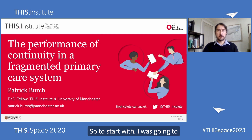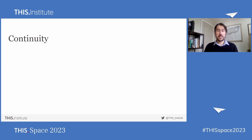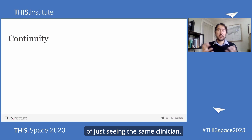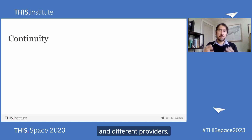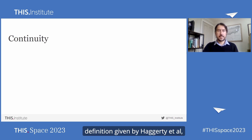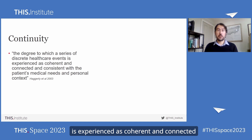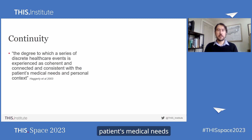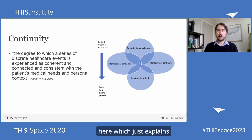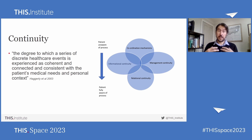To start with, I was going to talk to you about continuity — what is continuity? It can be thought of in a simple way, just seeing the same clinician. But when you're being seen by different clinicians and different providers, then it's more than that. I use this definition given by Hagerty et al., which is: continuity is the degree to which a series of discrete health events is experienced as coherent and connected and consistent with the patient's medical needs and personal context. I put a figure here which explains some of the elements that go to make up continuity as envisaged by Hagerty.